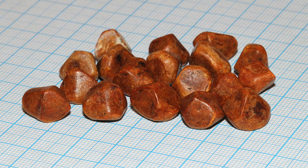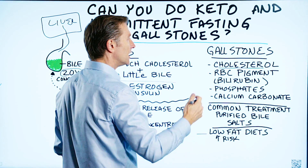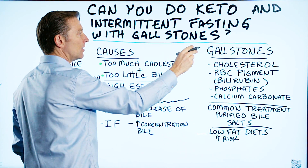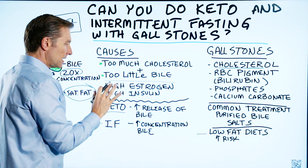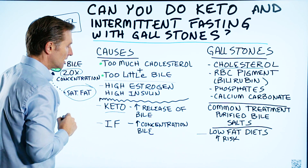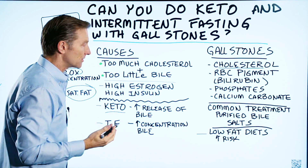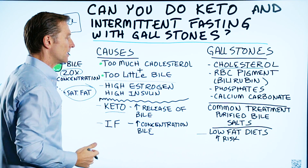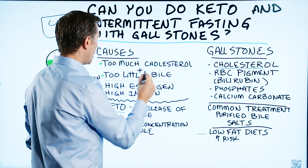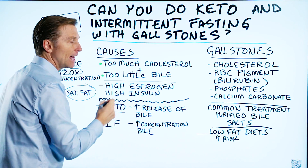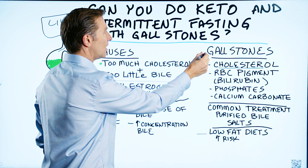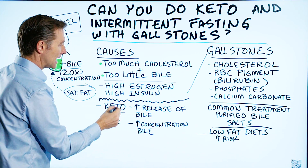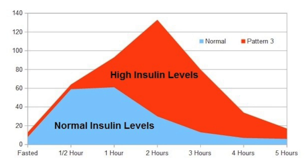What increases the risk of gallstones is a low-fat diet, because there's not enough fat to trigger the release of bile to dissolve the stone and keep it from saturating. A couple of other things: high estrogen — especially when a woman is pregnant, on birth control pills, or on hormone replacement therapy — can also trigger gallstones. Also, high insulin, as in diabetics especially type 2, can increase the risk. And keto is the opposite of this — you're normalizing and lowering insulin, so you're going to improve the situation.